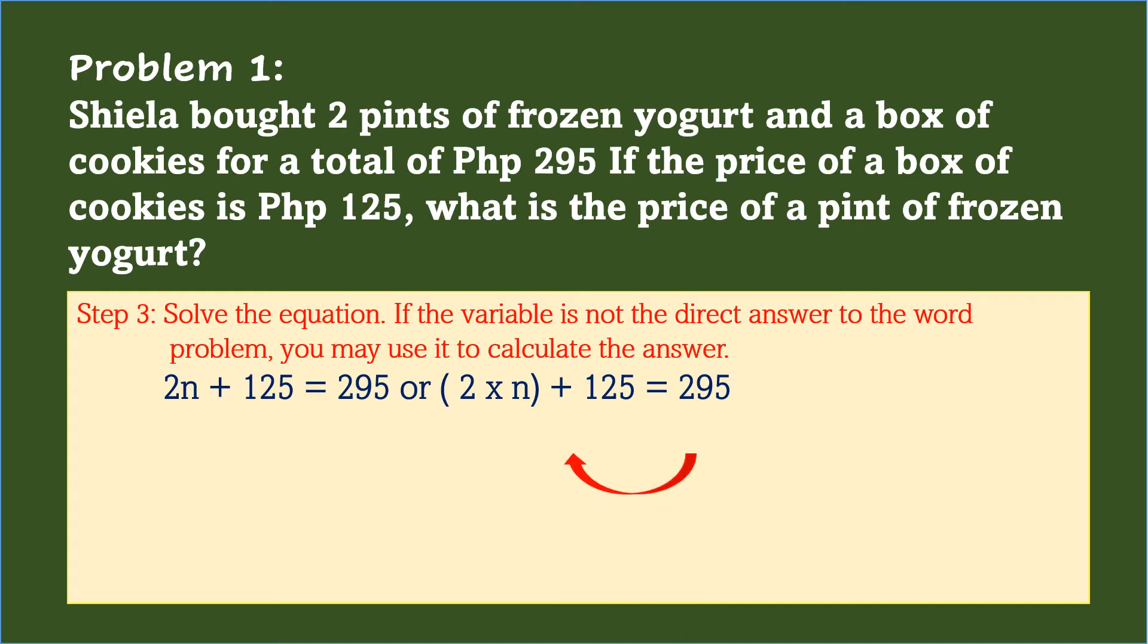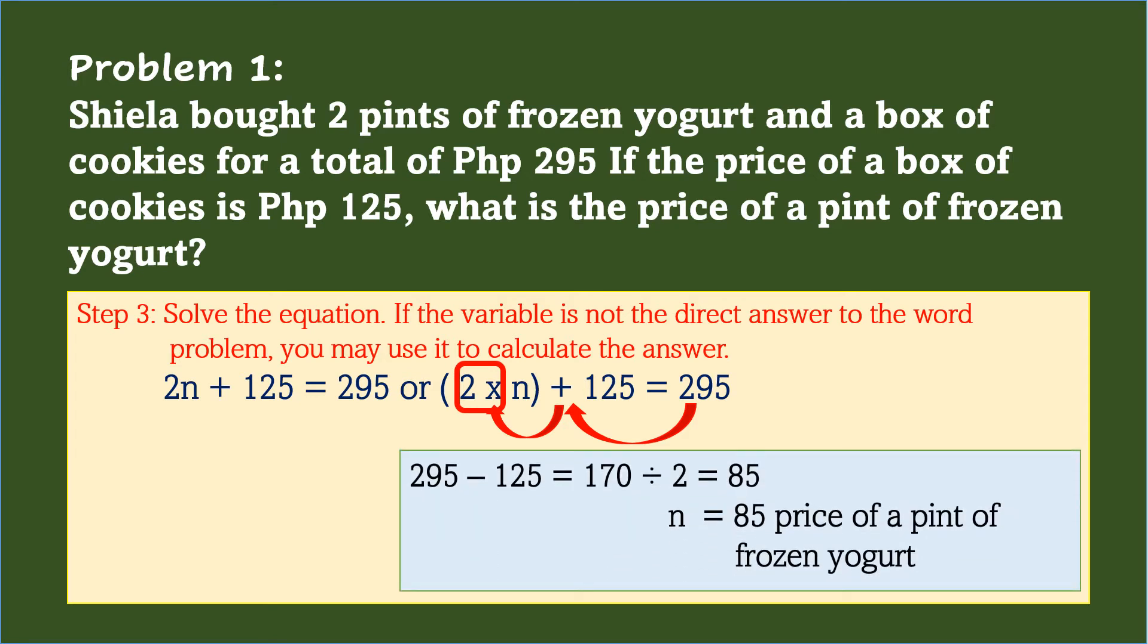Starting at the end, subtract 125 from 295, then divide the difference by 2. So it will be 295 minus 125 equals 170 divided by 2 equals 85. Therefore, 85 pesos is the price of a pint of frozen yogurt.